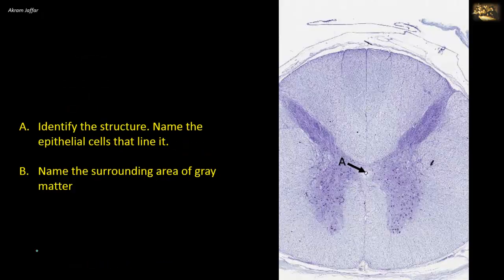Identify the structure, name the epithelial cells that line it, and then name the surrounding area of gray matter.